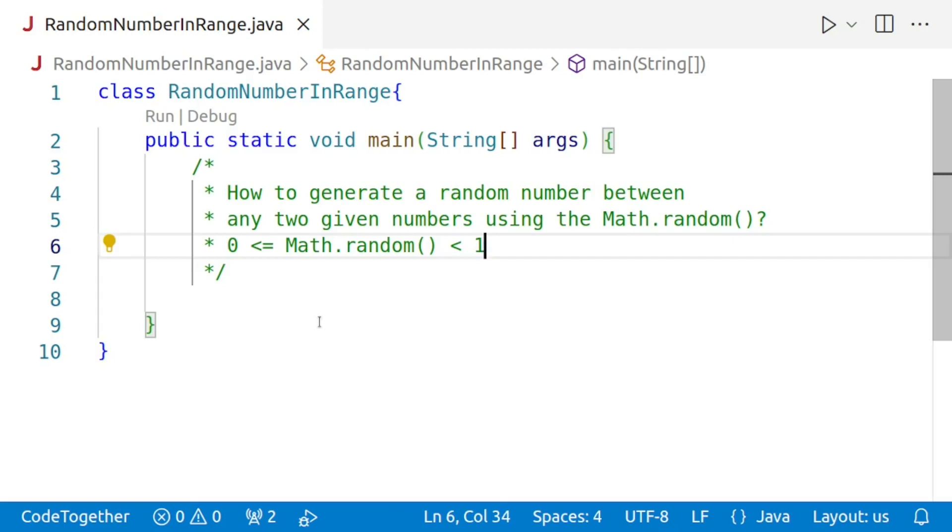That is, the maximum value returned by Math.random will be 0.99999 but not exactly 1. In other words, 0 is inclusive and might be returned but 1 is exclusive and it will never be returned. Now, we need a random number between two given numbers.